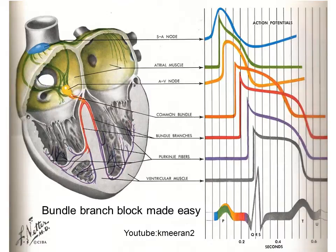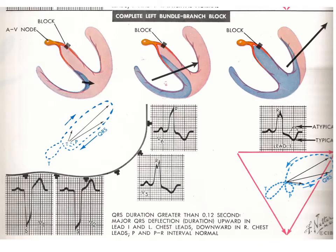In complete left bundle branch block, the block is in the left bundle, so the wave travels down the right ventricle first. This gives you a W pattern in lead V1 — down, up, down, up — if you can see the two S waves there.